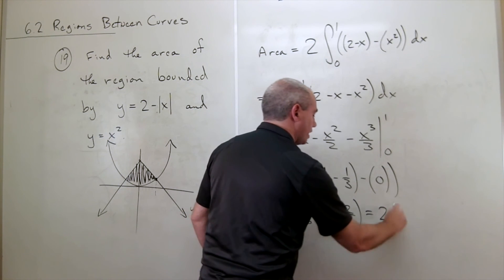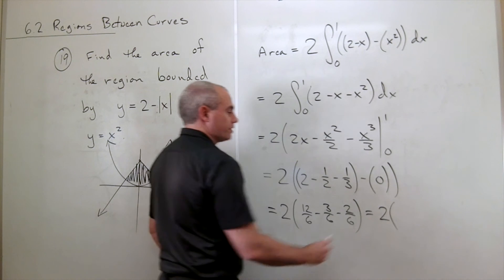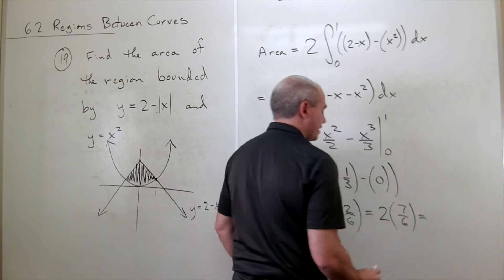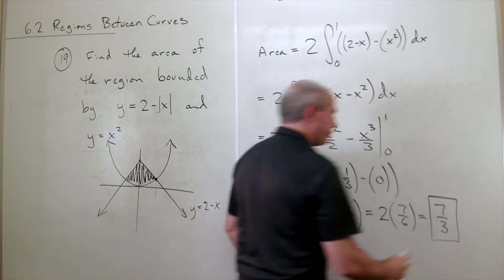So that's 2 times 12 minus 3 is 9 minus 2 is 7. 7 over 6, which is the same thing as 7 over 3.